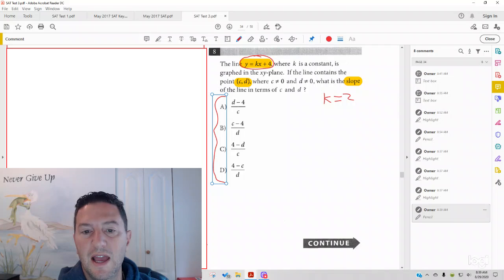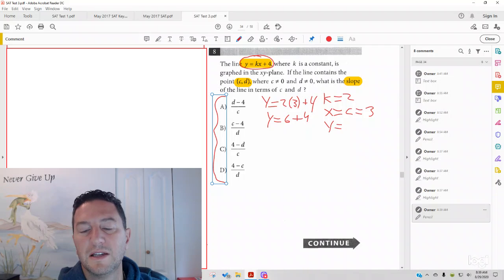Let's say k equals 2. And let's say x. Remember, x equals c, which equals, let's say it's 3. In that case, we say, y equals 2 times 3 plus 4. y equals 6 plus 4. So y equals 10. And remember, your y is also your d. So here you have your numbers.